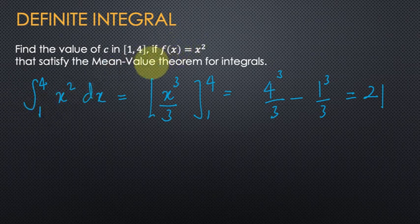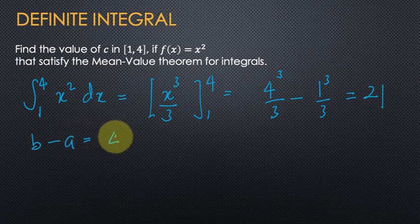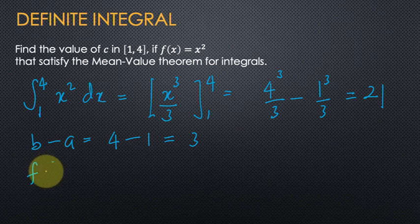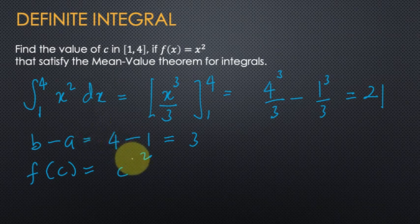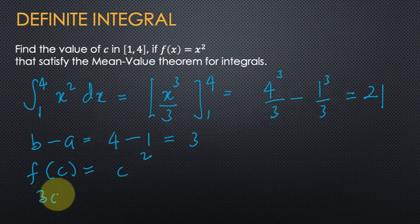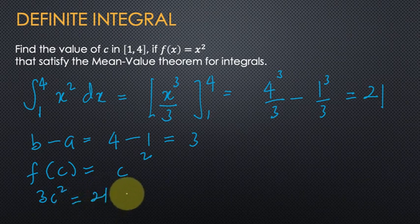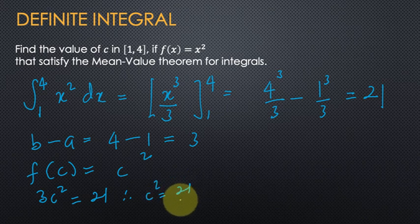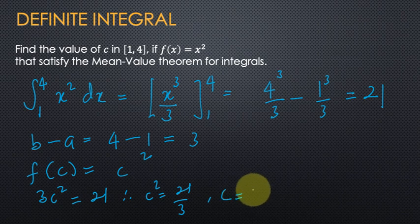Next, we find b minus a. So b minus a equals 4 minus 1, which equals 3. f(c) is equal to c squared. So c squared times 3 is equal to 21, meaning 3c squared equals 21. Therefore, c squared equals 21 over 3, which equals 7.